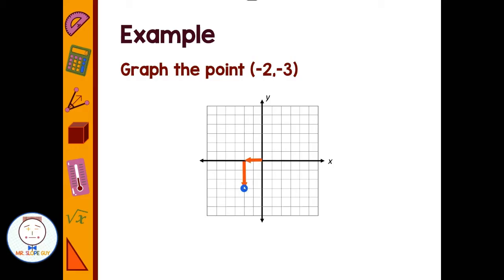So it's the address of where we're going. First number being left or right, the second number being up or down. We make both moves and then put our point on the coordinate plane.